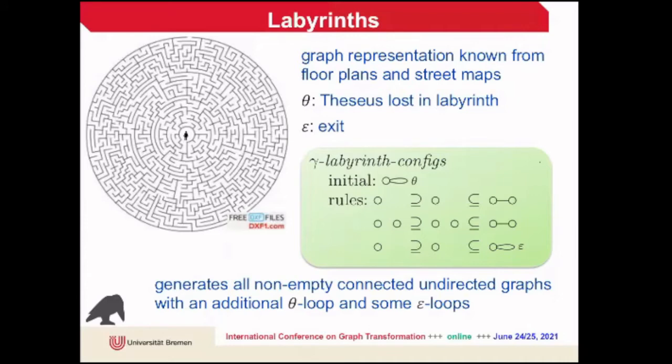In our graph transformational labyrinth configurations, we generate connected graphs. The first rule just adds a vertex by an edge to a given vertex, and this way you get all the trees. If you add with the second rule just some edges, you get all connected graphs. We start from a vertex with a theta loop—this is representing Theseus—and then we add with the third rule just some exits, elements also represented by such loops.